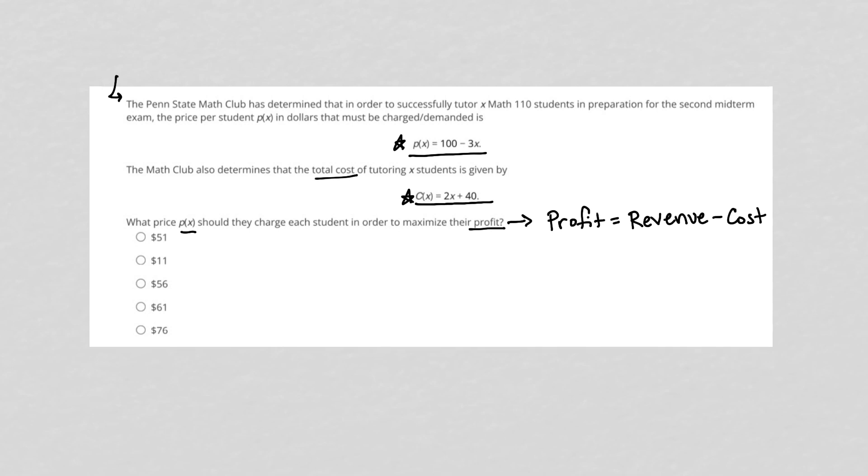So revenue is just really price, or in fact, I'll call it X times the price per, in this case, per student, or X times P of X. So our profit can be found by X times P of X minus C of X. That's how I find the profit.